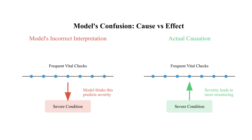Consider a medical diagnosis model that achieves high accuracy by learning that patients who had their vitals checked hourly were more likely to have severe conditions. A domain expert would immediately recognize this as misleading, since hourly checks are a result of severity, not a predictor of it.